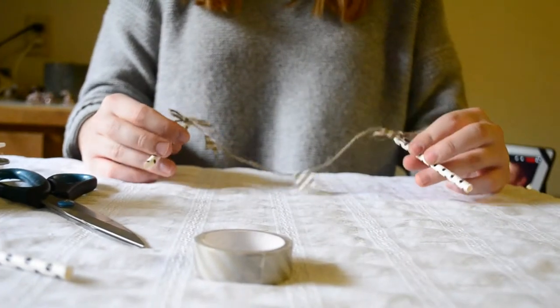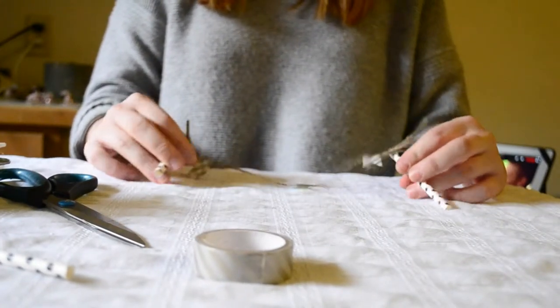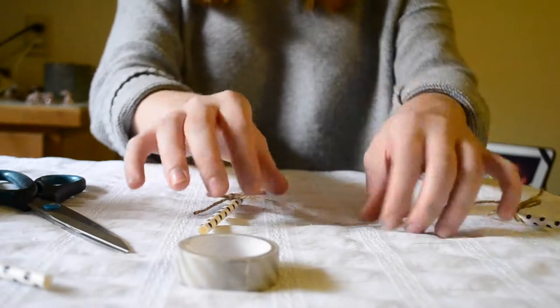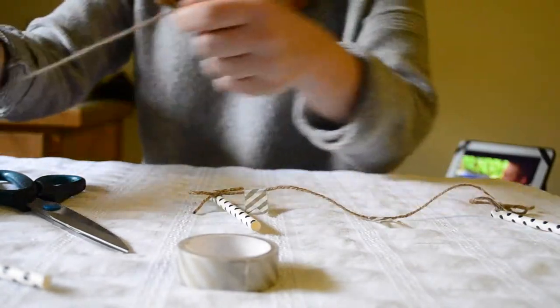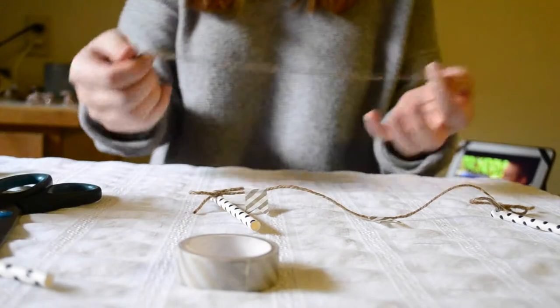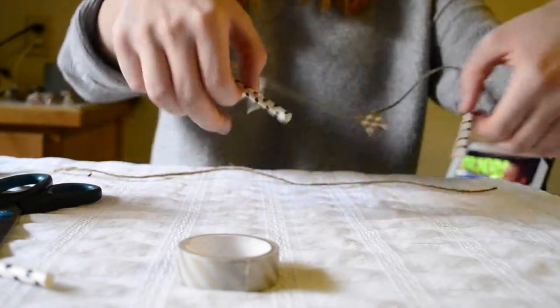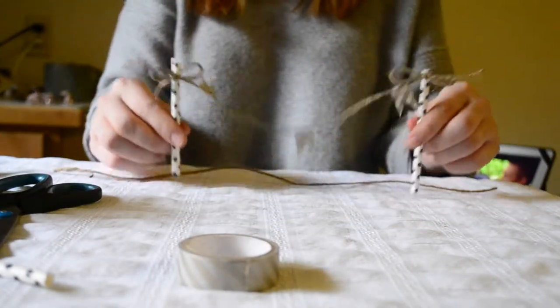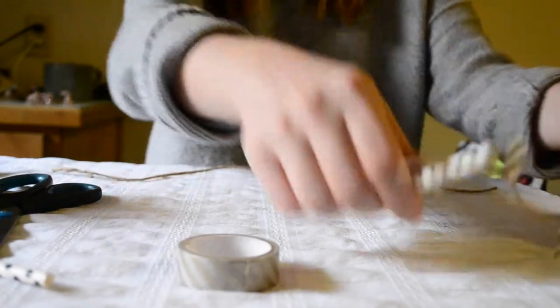The first step in making this mini banner is adding the flags to the jute. So I'm just going to go ahead and cut a length of jute and it's going to depend on how long you want your banner to be. I'm making mine to be a cake topper so it'll sit right like that on my circle cake.